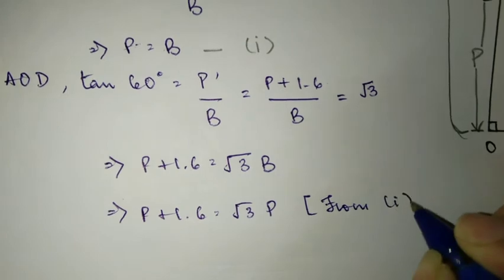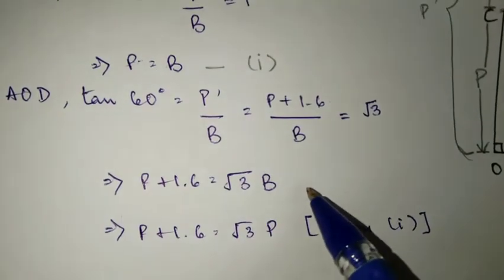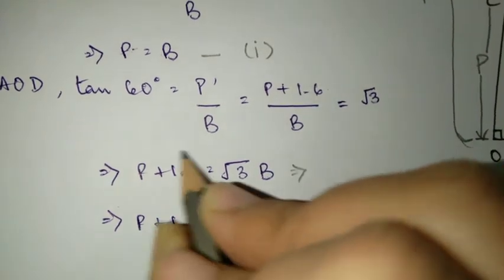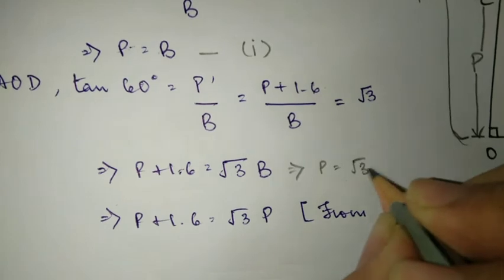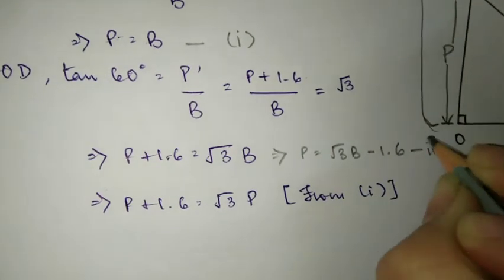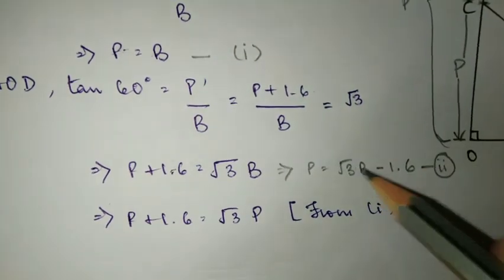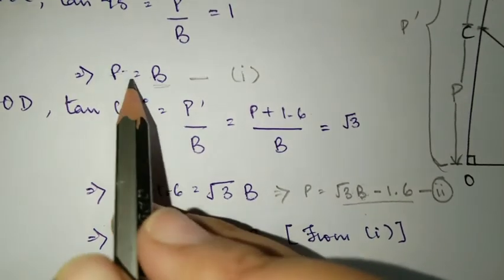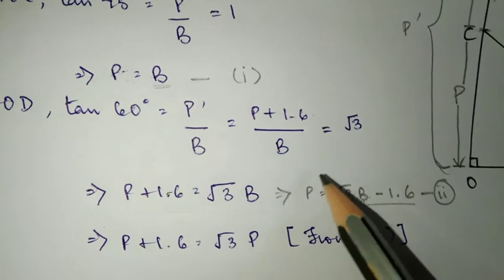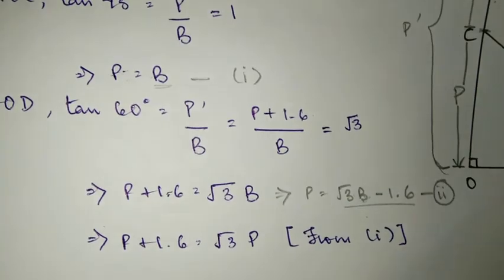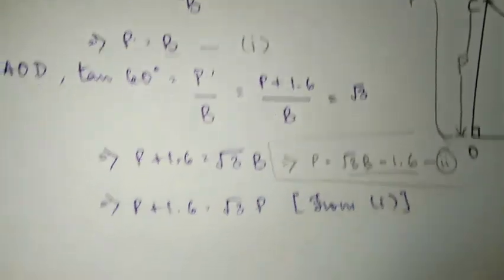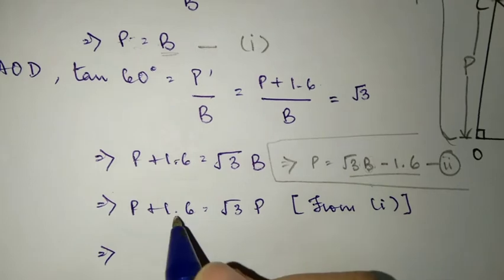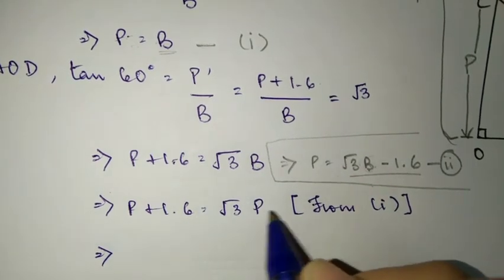We're going to substitute it. Instead of B we're going to write it in terms of P. From equation 1 and equation 2, you can solve it directly. If you solve it that way you will have B, but you know B is already equal to P, so even if you find B the answer is still the same, because from equation 1 they are both equal, okay.